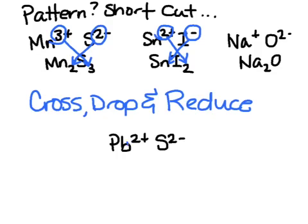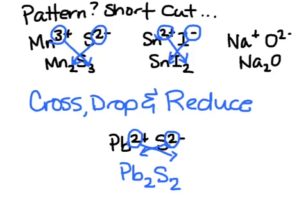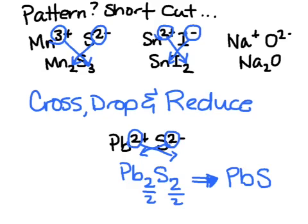Here's an example with lead and sulfur. Taking those ion charge values and crossing them over and dropping them down gives PB2S2. I can use that rule as long as I reduce — both numbers can be divided by two. Therefore, the chemical formula is PBS, and since we don't include ones in chemistry, it is just PBS.